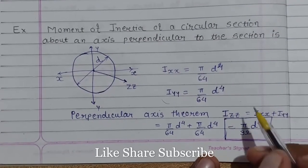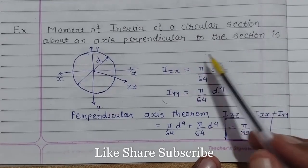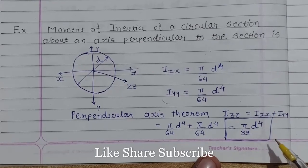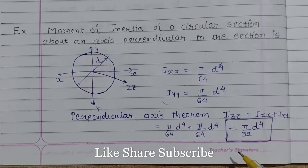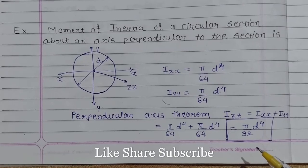Mass moment of inertia of a circular section about an axis perpendicular to the section is equivalent to π/32 × d⁴. I hope you get the concept of the perpendicular axis theorem. Do like, share, and subscribe to my channel for more such content and see you in the next video. Thank you.